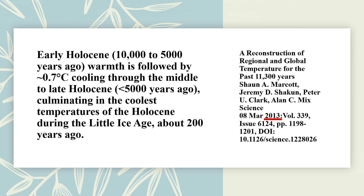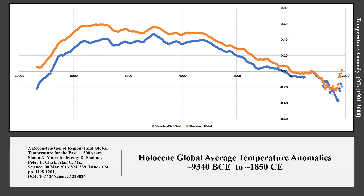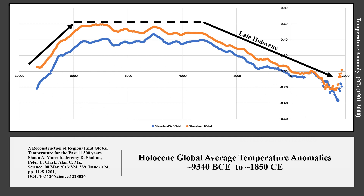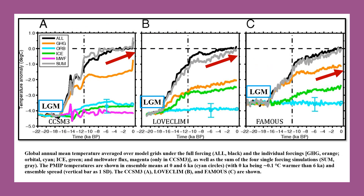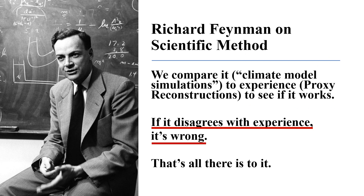This chart displays that result. Following the last glacial maximum, global temperature increased, followed by a period of warmth, and then global average temperature fell during the late Holocene until the Little Ice Age of 1450 to 1850. But this late Holocene fall in global temperature is not reflected in the projections of the climate models. Instead, they project an increase in global average temperature during the late Holocene. The climate model simulations thus disagree with the proxy reconstructions. Therefore, they are wrong.